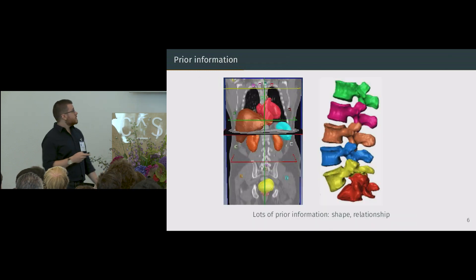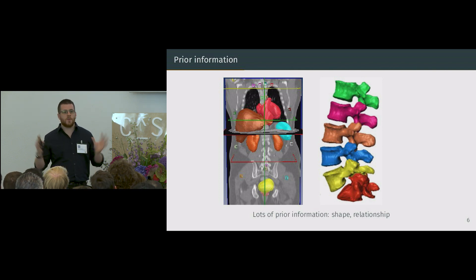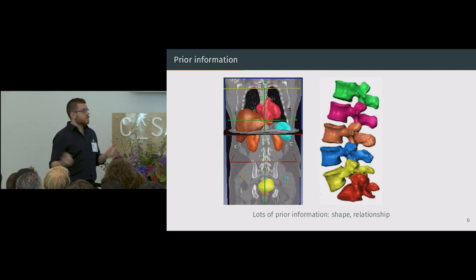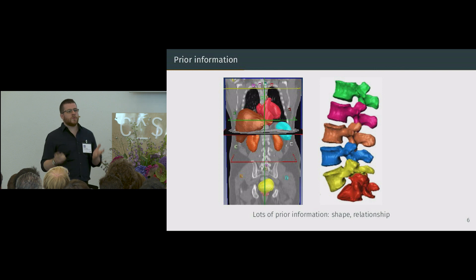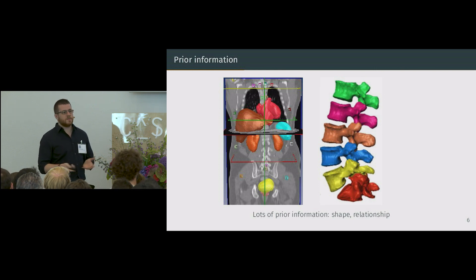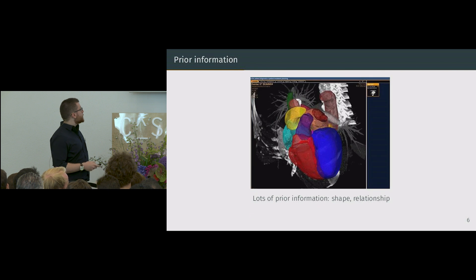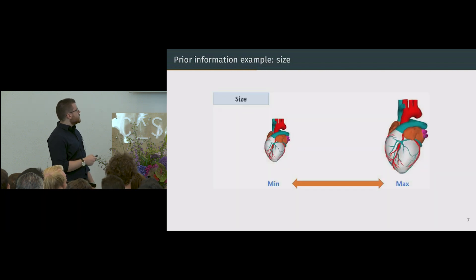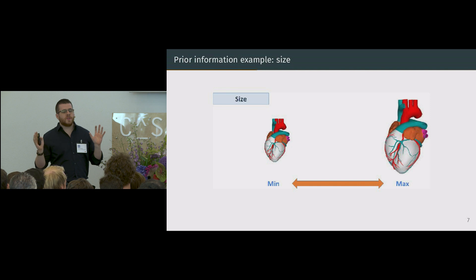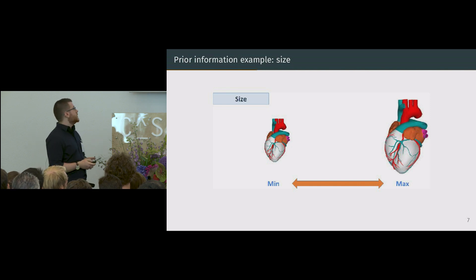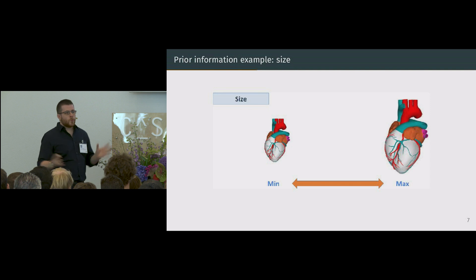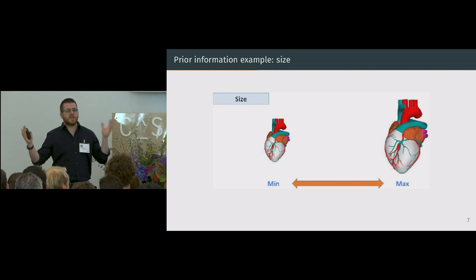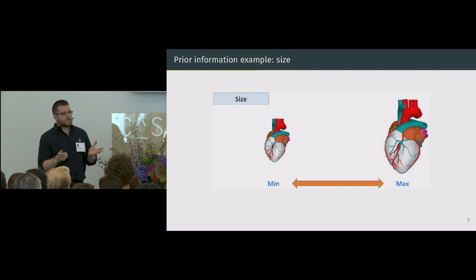In the medical field, we are lucky — we have a consistent point of view and distance of view with respect to what we want to segment. We know, to a certain limit, what to expect from the human body. There is variability, but not that much. So we can have a range of expected values — for instance, the size of a heart. We know it will vary between a range that makes sense, and outside of it, we know the network is producing something wrong.